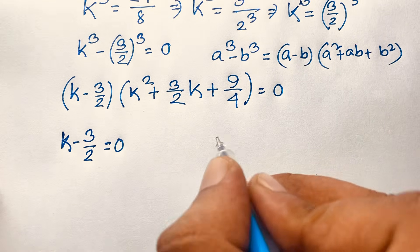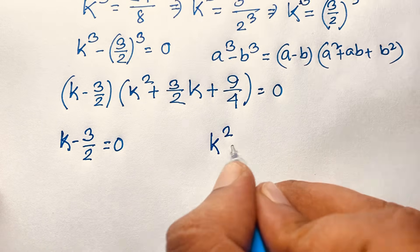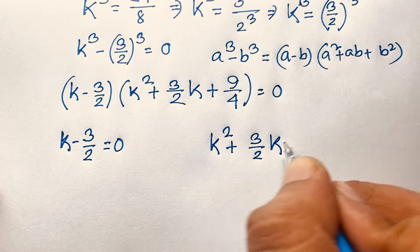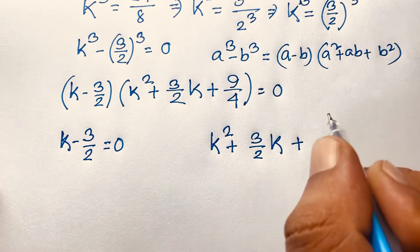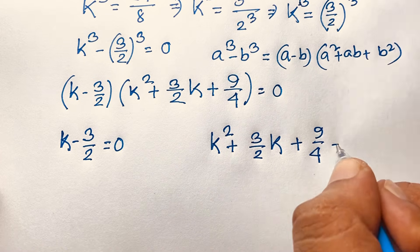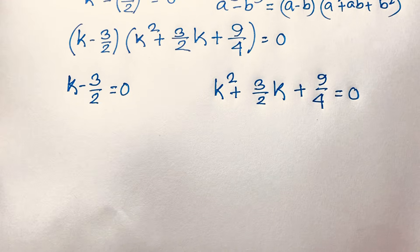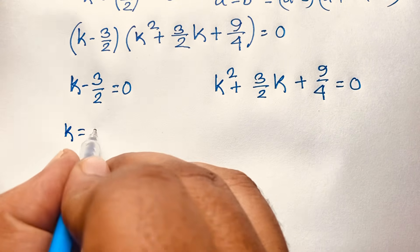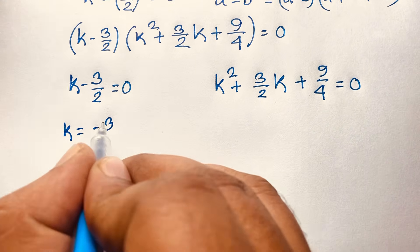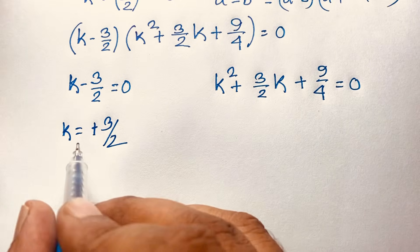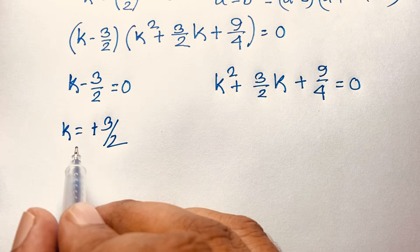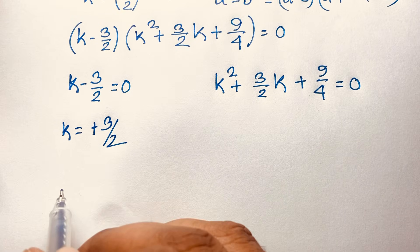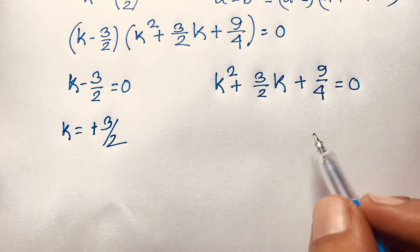Now we find two cases. Case 1: k − 3/2 = 0, giving k = 3/2. This is positive, so k = 3/2 is a nice real answer.